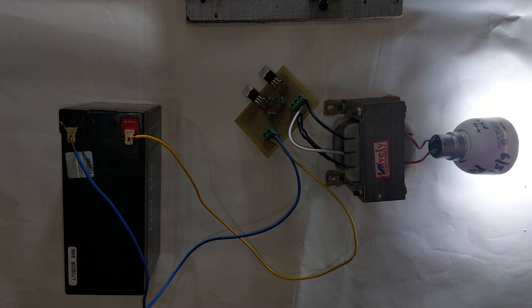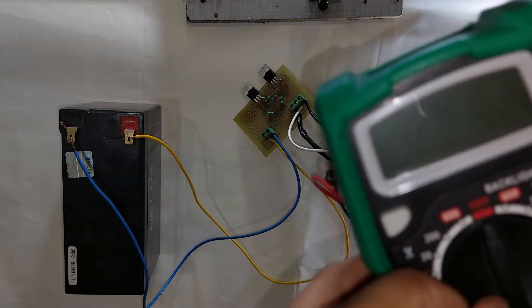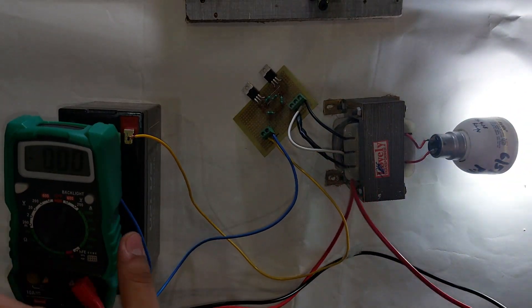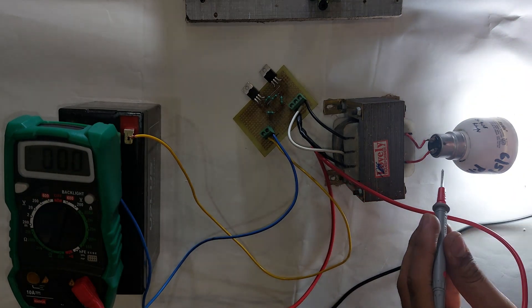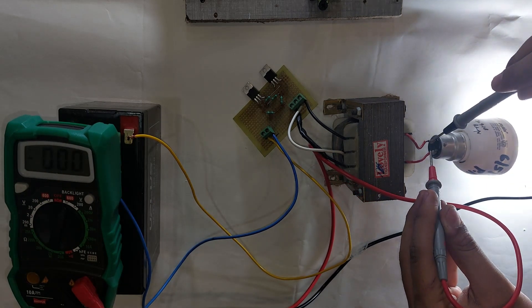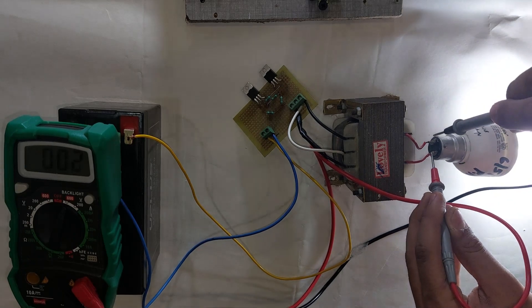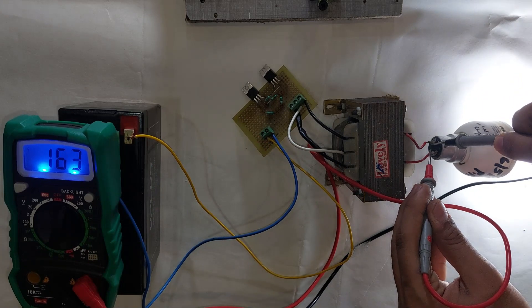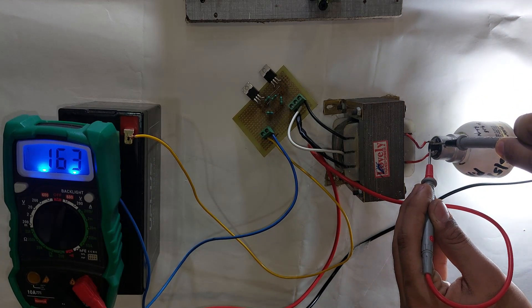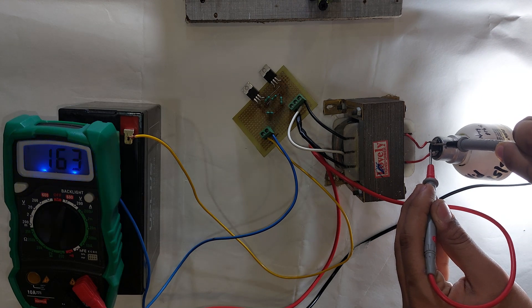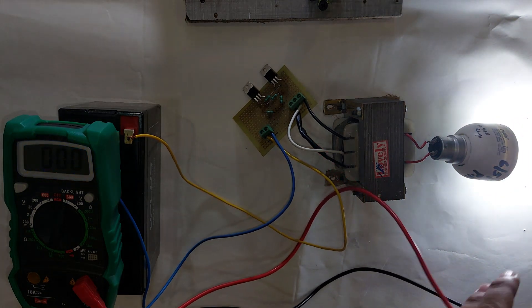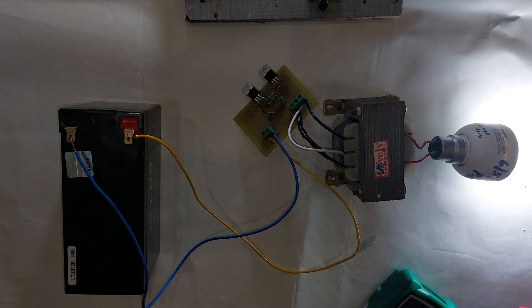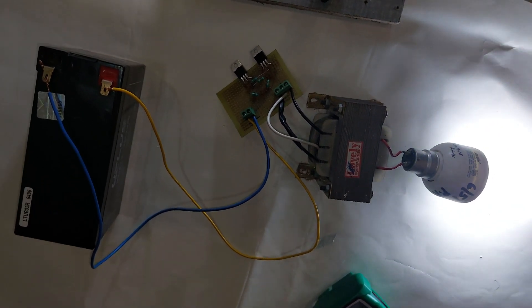Now, checking the output voltage, I take a multimeter and set it to AC voltage. The output voltage from the transformer is 160 to 162 volts because my battery is not properly charged, so it produces less voltage and the light will fluctuate.